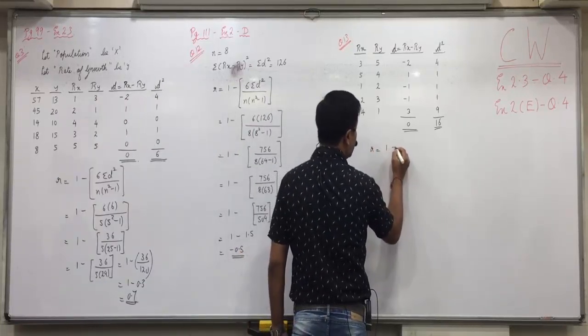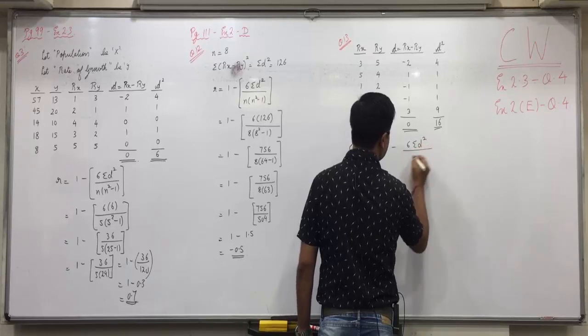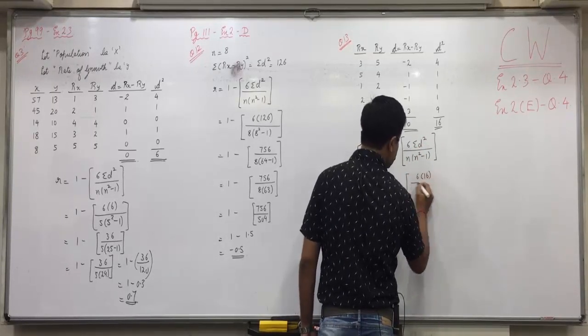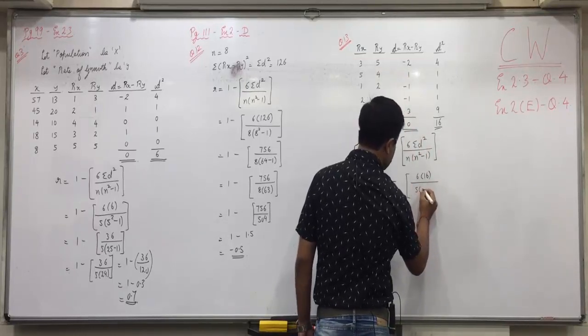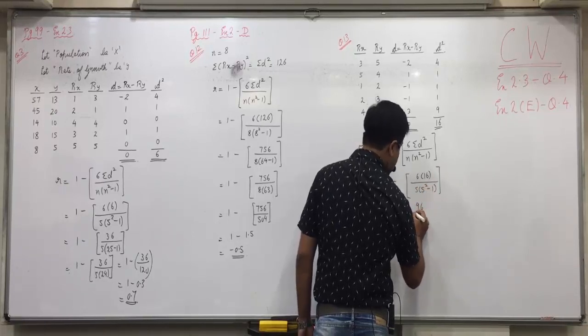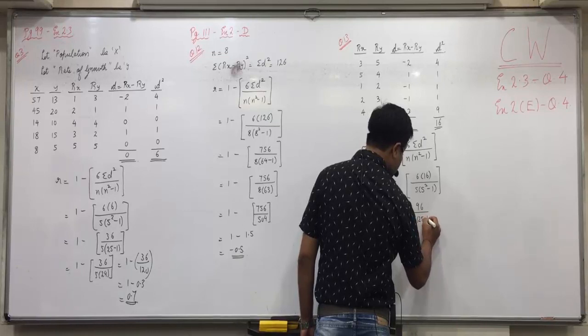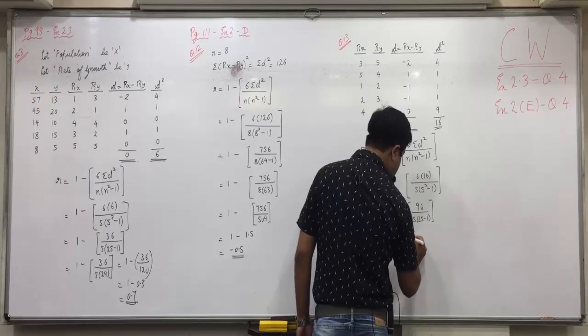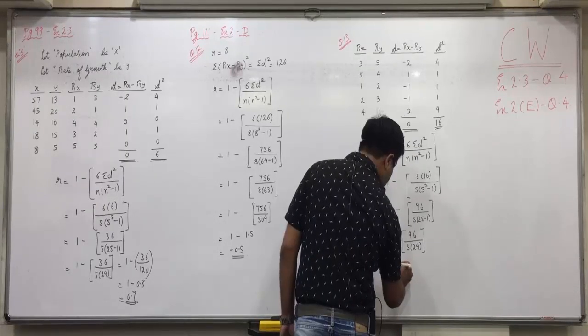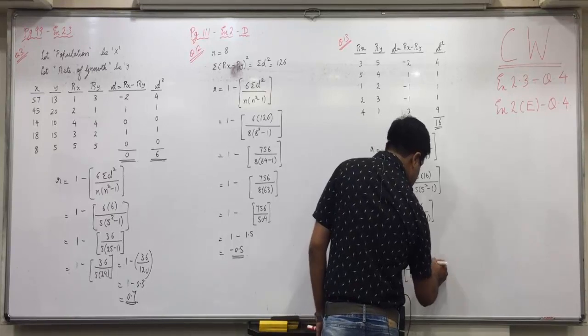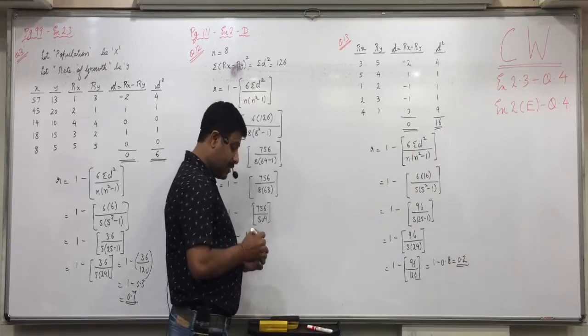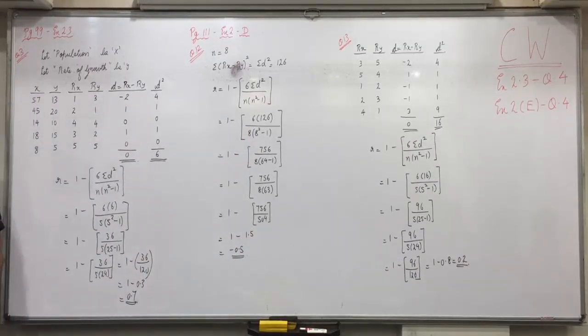Any confusions? Clear? Now, R is equal to 1 minus 6 sigma D square upon n into n square minus 1. So, 1 minus 6 into 16 upon 5 observations are there. So, 5 into 5 square minus 1. 1 minus 6 into 16 is 96 upon 5 into 25 minus 1. 1 minus 96 upon 5 into 24. So, 1 minus 96 upon 120 that is 1 minus 0.8 that is 0.2. Is everyone clear with this? Anyone having any doubt in it?